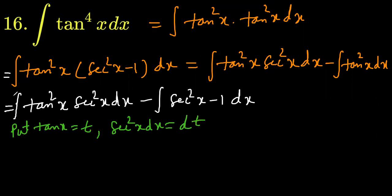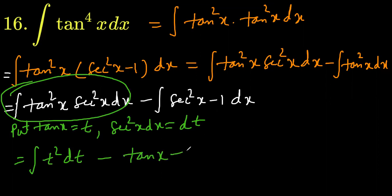And the first part, this part we are talking about is going to change to integration of t squared dt. Minus this is the integration of sec squared x is tan x, and the integration of 1 is x with respect to x. It is t cubed by 3.